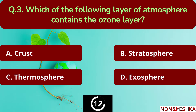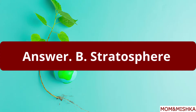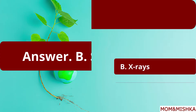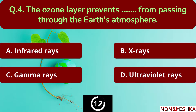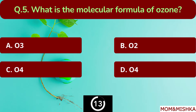Which of the following layers of the atmosphere contains the ozone layer? It's option B: Stratosphere. The ozone layer prevents blank from passing through the Earth's atmosphere. The answer is option D: ultraviolet rays.